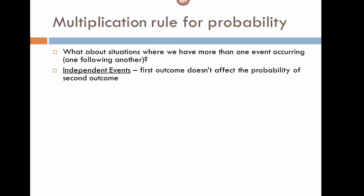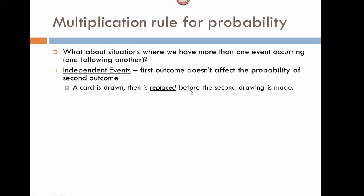In this situation, we need to be concerned about independent events — whether the first event we perform affects the second event. If the first event and its outcome do not affect the probability of the second event, we say we have independent events. This multiplication rule applies, for example, when drawing multiple cards from a deck. If we draw a card and then replace it before making the second draw, we have two independent events, because we're not changing the number of cards in the deck.